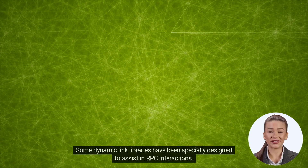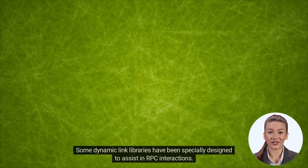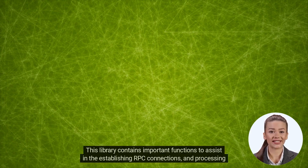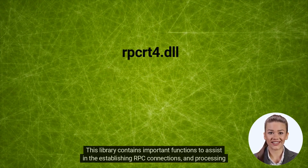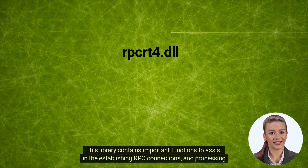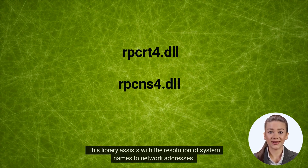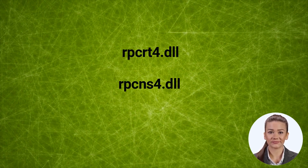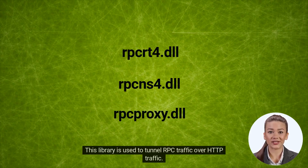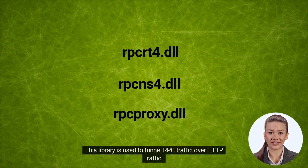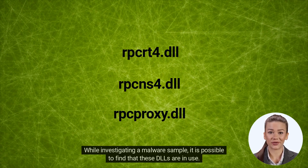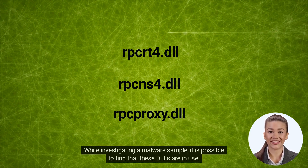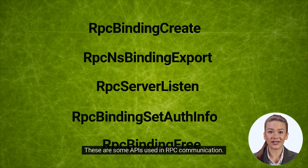Some dynamic link libraries have been specially designed to assist in RPC interactions. One library contains important functions to assist in establishing RPC connections and processing exchanged data. Another assists with the resolution of system names to network addresses. Another library is used to tunnel RPC traffic over HTTP traffic. While investigating a malware sample, it is possible to find that these DLLs are in use. These are some APIs used in RPC communication.